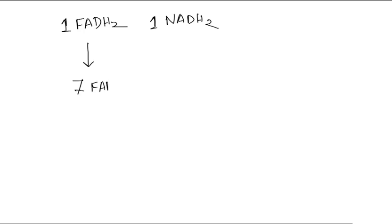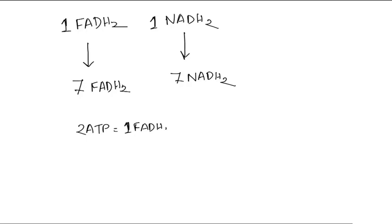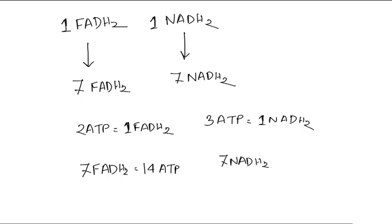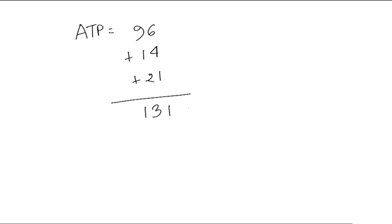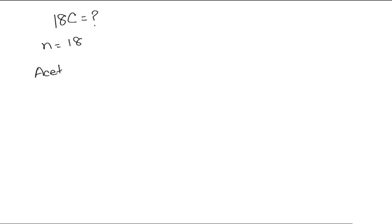So in case of a 16-carbon palmitic acid, from seven cycles there will be seven FADH2 and seven NADH2. We know in the respiratory chain two ATPs are formed from one FADH2 and three ATPs are produced from one NADH2. So from seven FADH2 there is 14 ATP, and from seven NADH2 there is 21 ATP. On the other hand, from one molecule of acetyl-CoA there is production of 12 ATP, so from 8 acetyl-CoA there is 8 × 12 = 96 ATP. So in total the ATP production is 131 ATP. During fatty acid activation in the cytoplasm, two ATPs were expended, so the net production is 129 ATP.